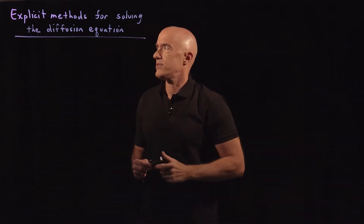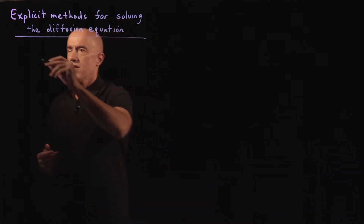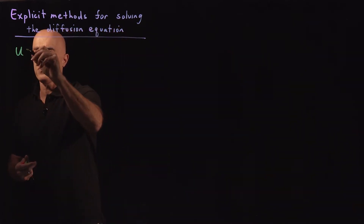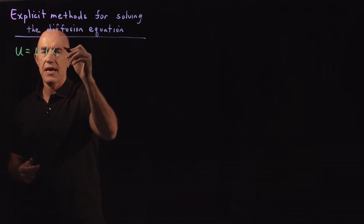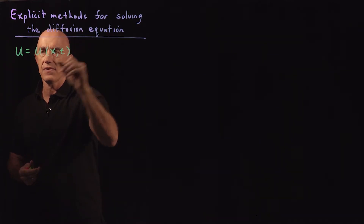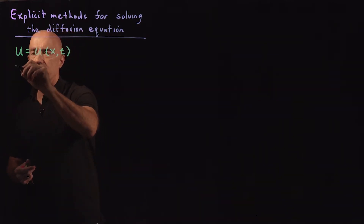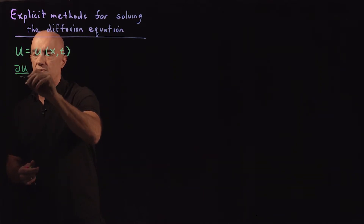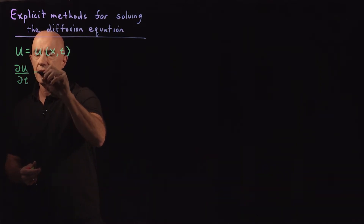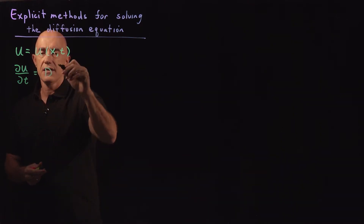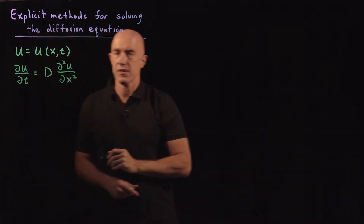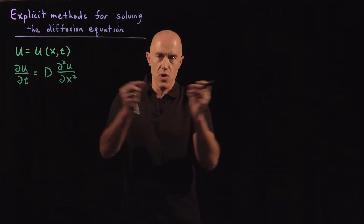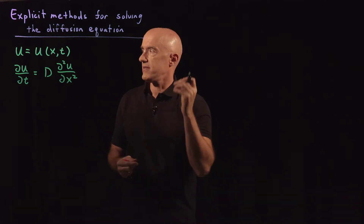Let me introduce the diffusion equation. We're going to look for the solution u, which will be a function of one dimension — position x and also a function of time. The diffusion equation tells us: the partial of u with respect to time is equal to the diffusion constant times the second partial derivative of u with respect to x squared. So we're talking about diffusion in one dimension, diffusing in time.